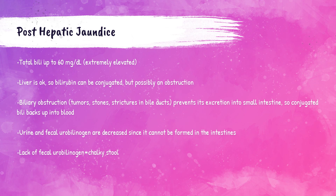Patients with post-hepatic jaundice have an extremely elevated total bilirubin level, up to 60 milligrams per deciliter. Because the liver is functioning normally, bilirubin is able to be conjugated. However, a biliary obstruction due to stones, tumors, or strictures in the bile ducts prevents conjugated bilirubin from being excreted into the small intestine, leading to a high increase of conjugated bilirubin in the blood. Without urobilinogen being formed, the patient will have no color in their feces, leading to a chalky white-colored stool.